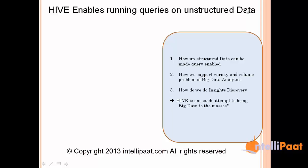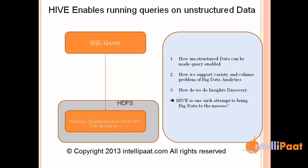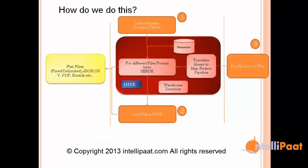Let's see what Hive does internally to make this happen. You have files — fixed files, delimited, JSON, PDFs, emails, anything. The requirement is we need to make that file queryable. This file is inside HDFS, and Hive comes in between and makes it queryable. If you want to operate on a raw file you can do MapReduce, but when you use Hive you can use SQL on top of that file.